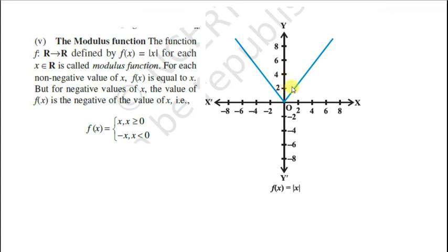Toh yahan 2 par bhi function ki value 2 rahegi, 4 pe 4 rahegi, minus 2 pe bhi 2 rahegi, minus 4 pe 4 ho jayegi function ki value. Toh jo graph hoga, ye hamesha x axis se upar ki taraf banayega. Niche ki side nahi hoga, kyunki niche y ki value negative ho jayegi, jabki modulus function ki value hamesha positive hoti hai.